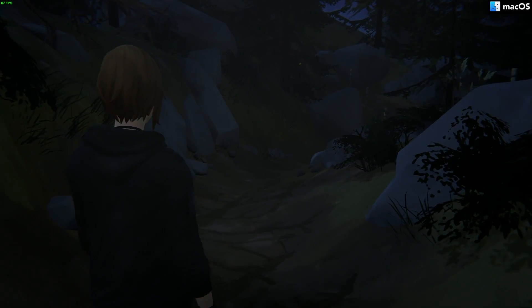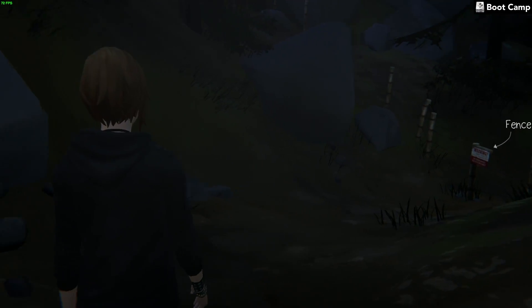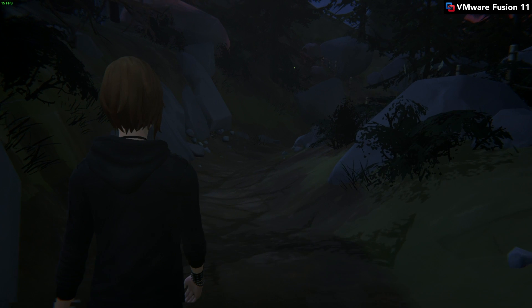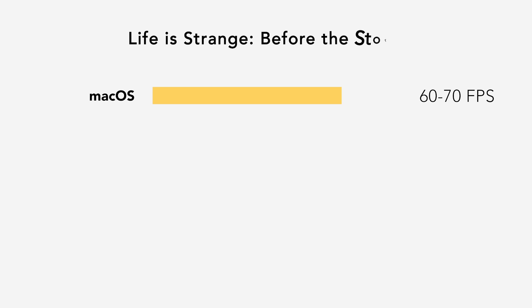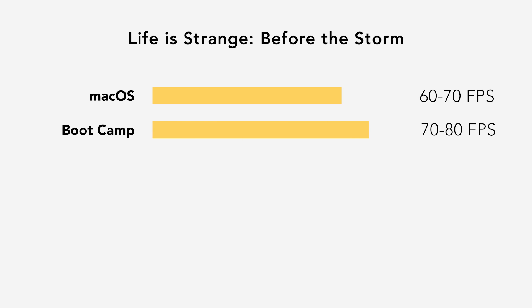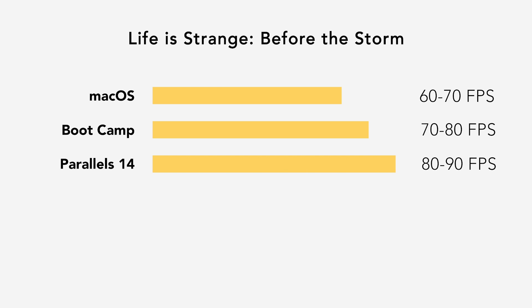Moving on, we have the adventure game Life is Strange: Before the Storm. Before the Storm is not a demanding game at all. Under macOS it utilizes Metal and runs at 60 to 70 frames per second. Windows 10 Bootcamp plays it at around 70 to 80 FPS, and to my surprise, Parallels is seeing 80 to 90 frames per second. I don't know if this frame rate is accurate, but wow. Fusion plays Before the Storm, but at less than 20 frames per second.